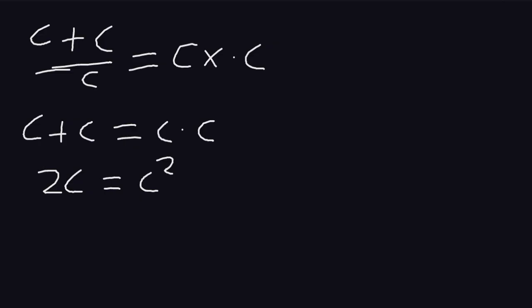Now we can have this as c squared is equal to 2c. If 2c moves to the left, then we have c squared minus 2c is equal to 0.